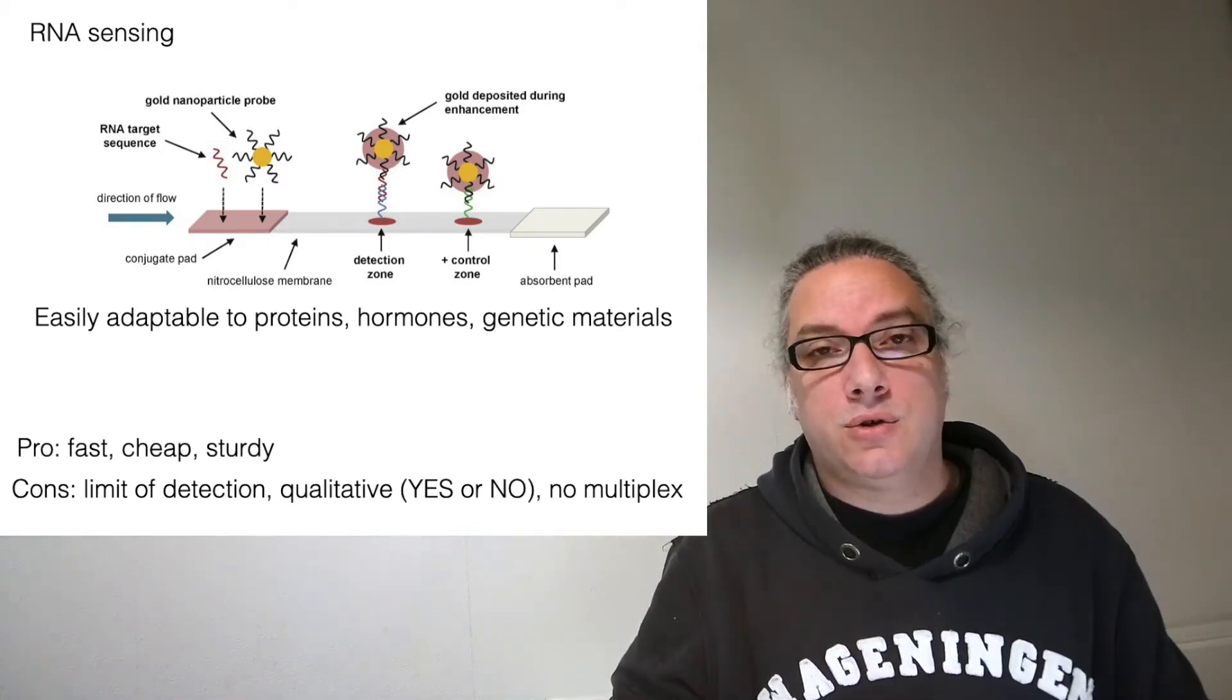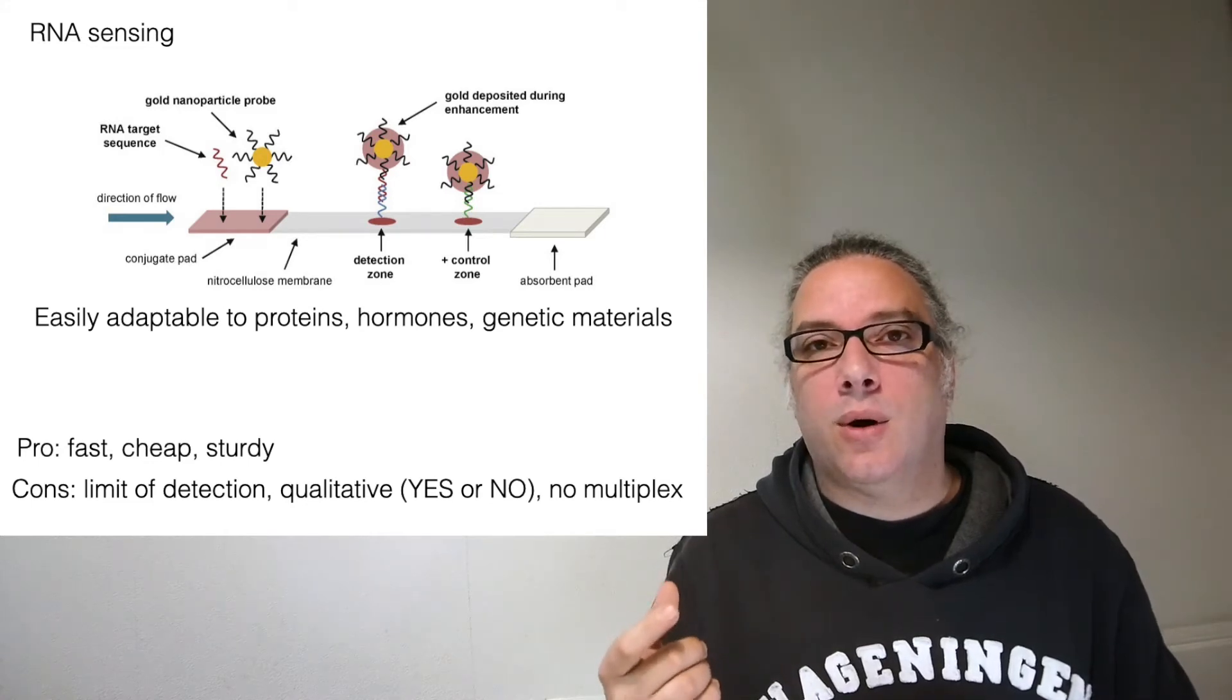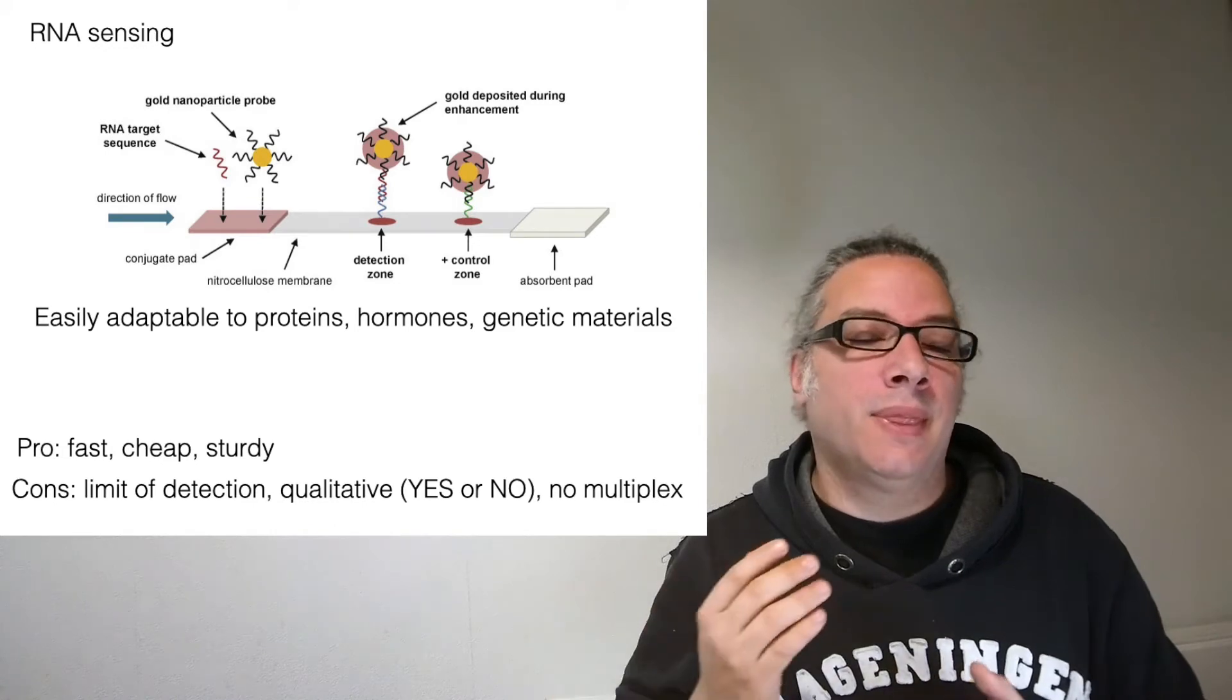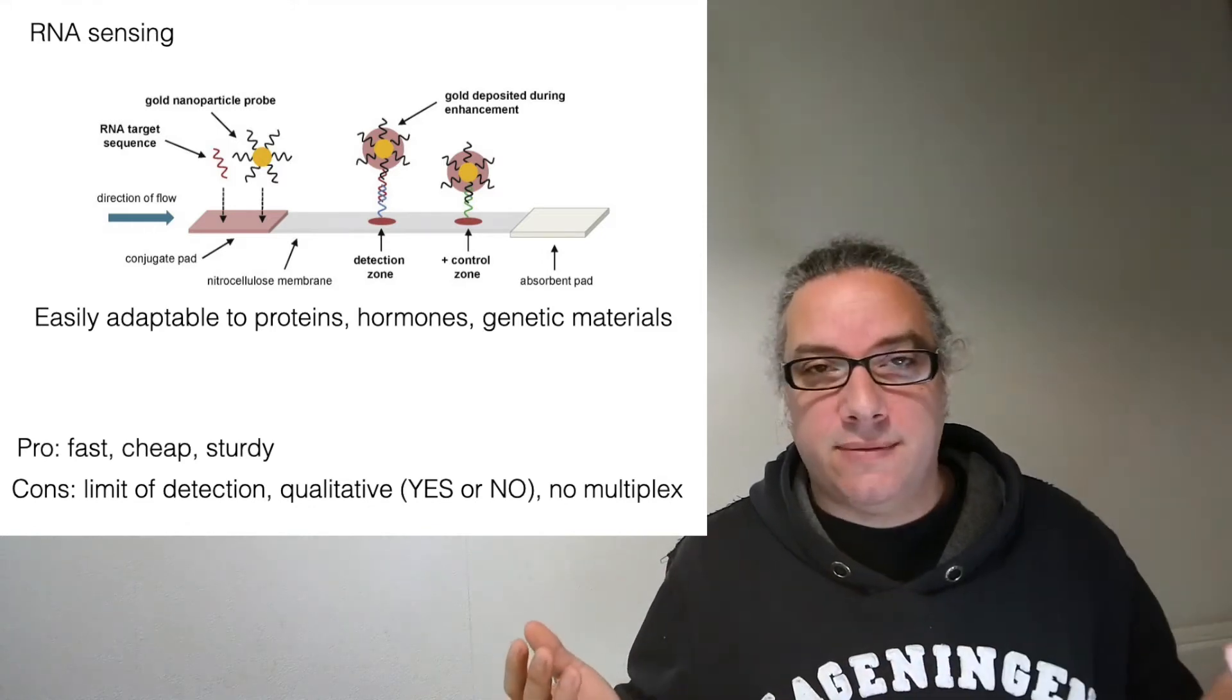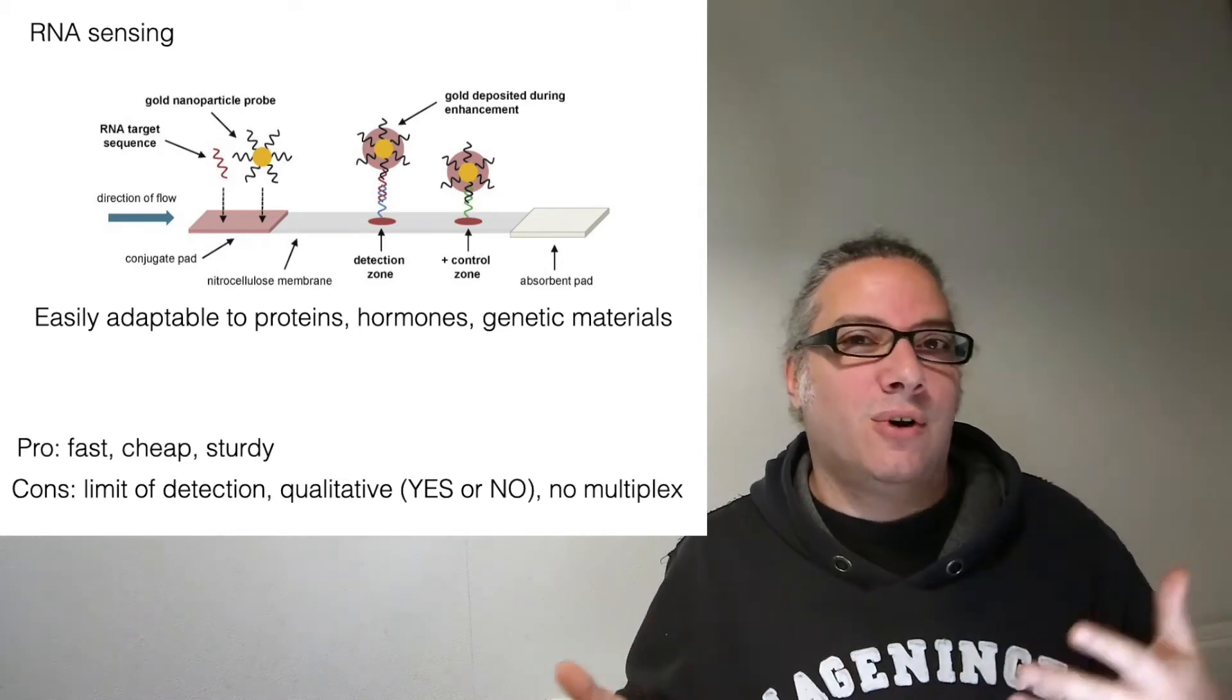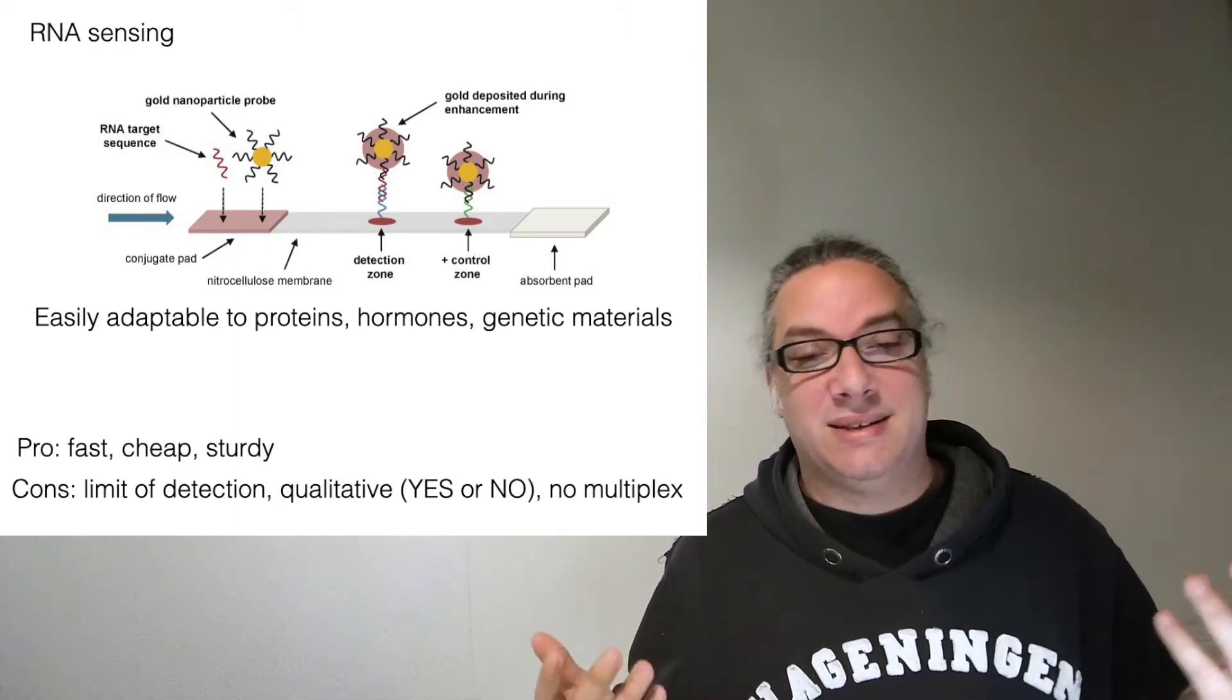On the cons, usually the limit of detection is really low. I cannot detect very low amounts of analyte because I need to see it—the detection is by eye. Most of the time it's only qualitative, so I have a yes or no answer, which is perfectly fine with pregnancy tests. I want to know if I'm pregnant or not; I cannot be pregnant at 50%, that doesn't make any sense.